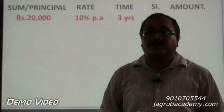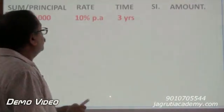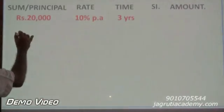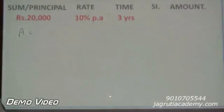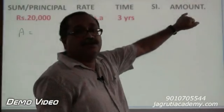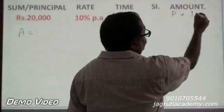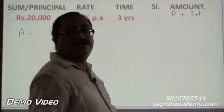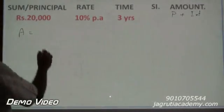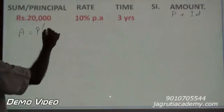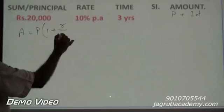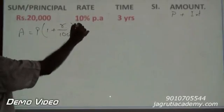Now, there is a formula for compound interest. The first formula is A is equal to - A here is amount and amount is equal to principal plus interest, is called amount. So, A is equal to P into 1 plus R by 100 to the whole power N.